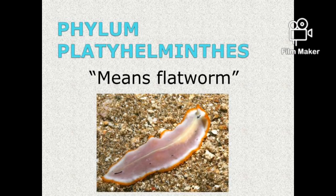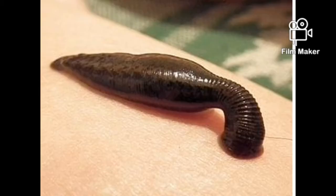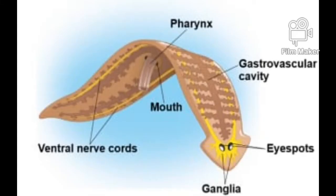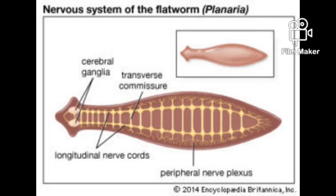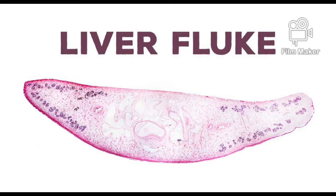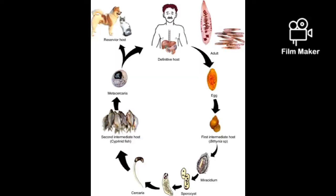The third phylum is Phylum Platyhelminthes. 'Platy' means flat and 'helminthes' means worm, so these are also called flatworms. Organisms in this phylum are dorsoventrally flat. They most likely live in aquatic regions and also in humid terrestrial areas. Some also live in human bodies as endoparasites — for example, tapeworm. The longest flatworm ever found was 90 feet long. They are triploblastic and are the first acoelomates. They have an organ level of organization and can also cause parasitic diseases like liver fluke in human livers. Examples are planaria, leech, and flatworm.